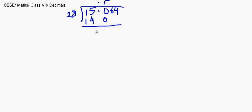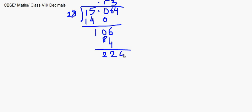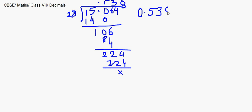Subtracting 140 from 150 gives remainder 10; bring down 6 to get 106. 28 × 3 = 84, giving remainder 22; bring down 4 to get 224. 28 × 8 = 224, remainder 0. So the answer is 0.538.